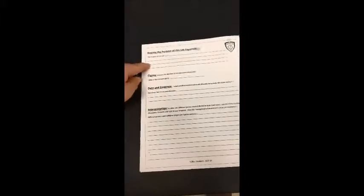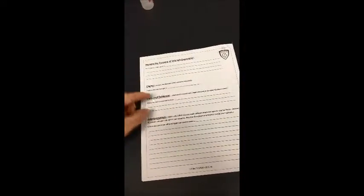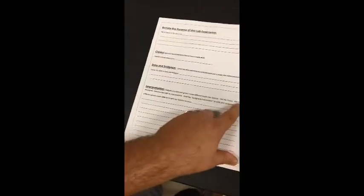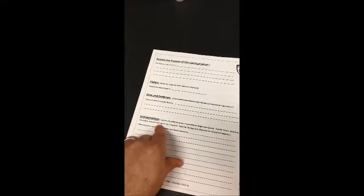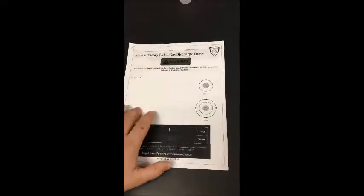A good old claim, evidence, interpretation. Purpose: identify the unknowns. Claim: I believe the unknown gas is one of the examples. I know my claim is accurate because... And then interpretation: I want you to use the explanation. This is very much like the part C question - electrons, absorption and emission and light.